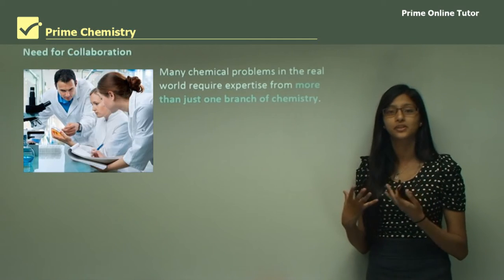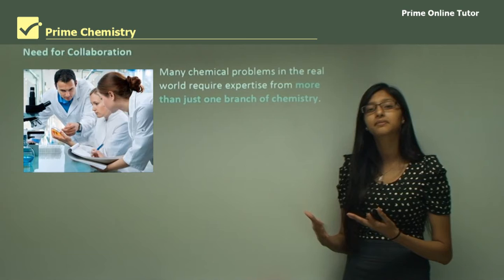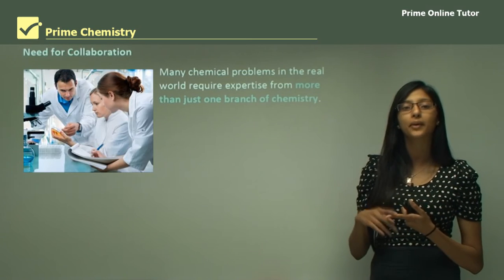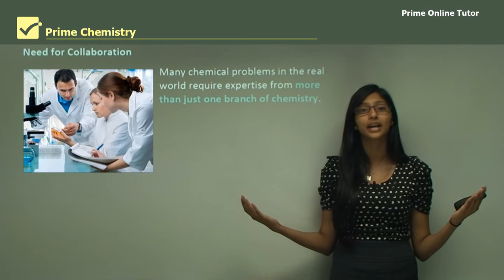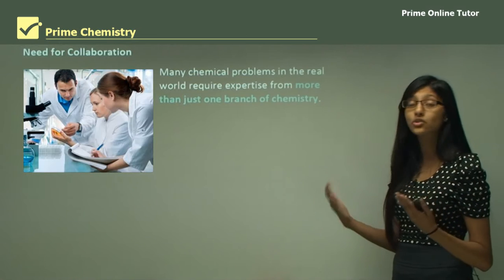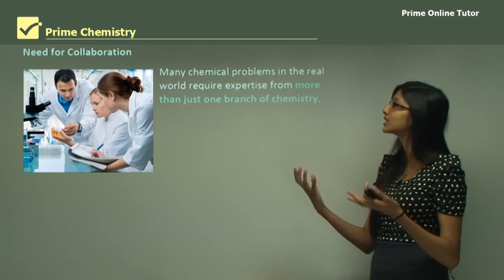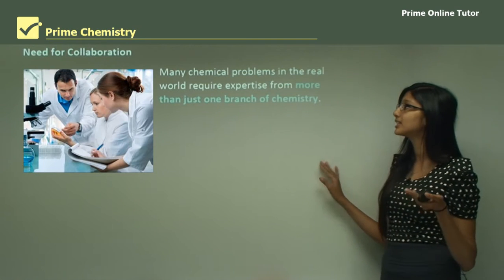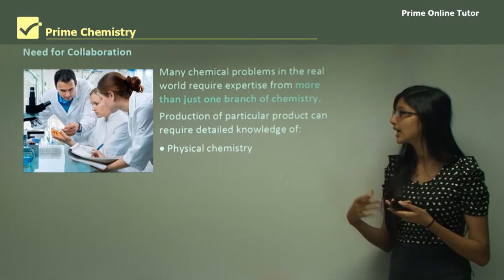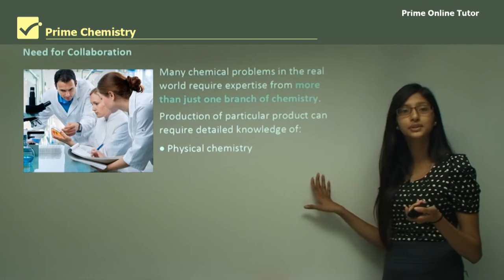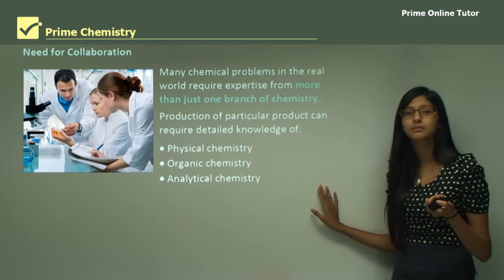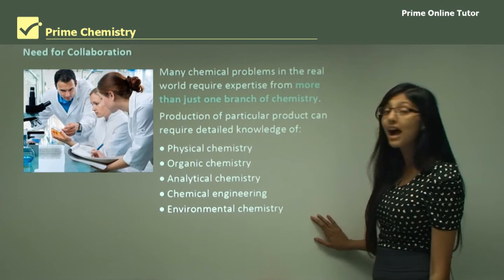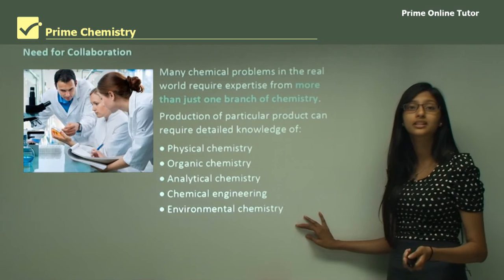Now let's look at the need for collaboration. Each of these different branches of chemistry involves very different tasks, so it's impossible for one person to know all of them and be an expert in every branch. Many chemical problems in the real world require expertise from more than one branch of chemistry. For example, production of a particular product can require detailed knowledge of physical chemistry, organic chemistry, analytical chemistry, chemical engineering, and environmental chemistry — five different branches just to produce one product.